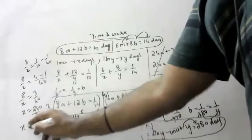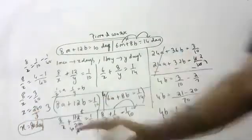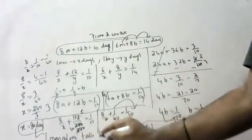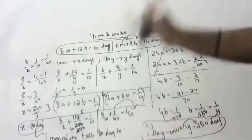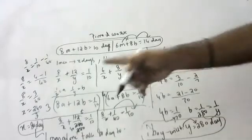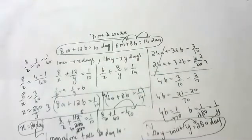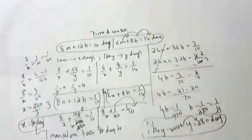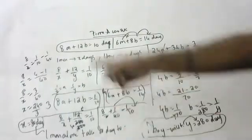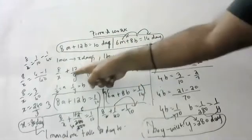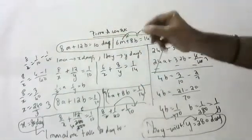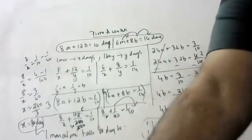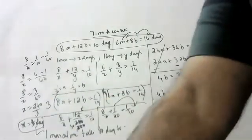From 8/x = 3/40, we get x = 240/3 = 80 days. So one man alone takes 80 days to complete the work, while one boy alone takes 280 days. This type of question is very important. Never write the intermediate variable equations directly in your answer — you can use them in rough work, but writing them directly will cost you marks.